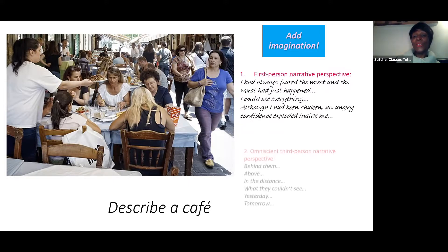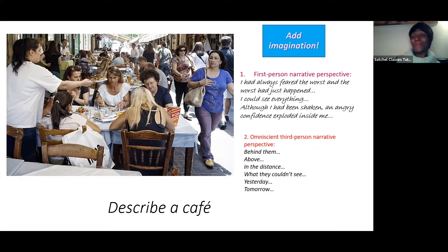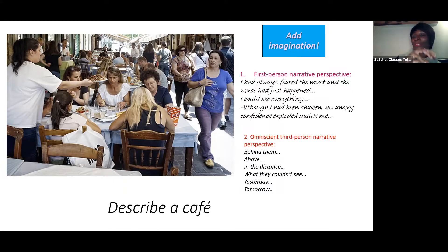You can also think about using third person omniscient, which means all-knowing. That means you could describe from one person — perhaps the grandma, then the granddaughter, then the aunt, then the waiter and the owner — lots of different people's perspectives. You have an omniscient overview.